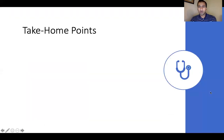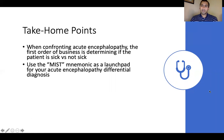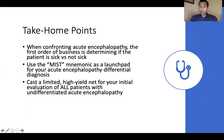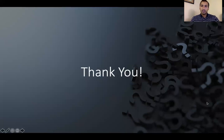A couple of take-home points from this talk. One: when confronting a patient with acute encephalopathy, the first order of business is determining if the patient is sick or not sick — and if they're sick, deal with that rather than chasing an obscure diagnosis. Two: use the MIST mnemonic as a launch pad for your acute encephalopathy differential. Three: cast a limited, high-yield net for your initial evaluation of all patients with undifferentiated acute encephalopathy. And four: use information gained from that initial evaluation — as we did in our case — to determine next steps in workup and treatment. Thank you very much for your time and attention, and good luck out there.